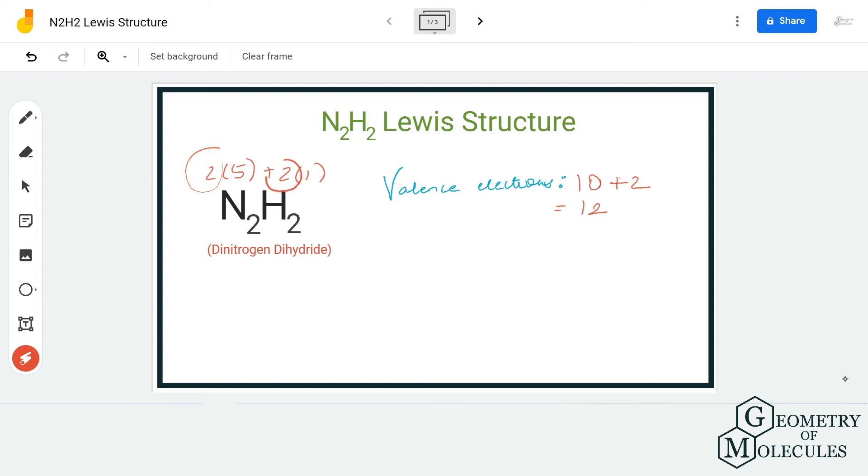Once you know the number of valence electrons, start placing the atoms to form a structure. Here both the nitrogen atoms will take the central position and the hydrogen atoms will be placed on the terminals. Once you have done that, place a pair of electrons between nitrogen and hydrogen atoms and both nitrogen atoms to show a bond.